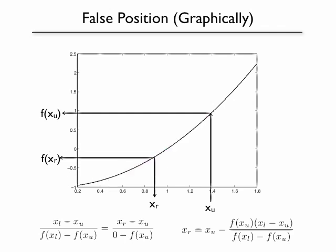We have to choose whether our new root x_r and x upper or x lower brackets it. In this case, the root is bracketed by f of x_r and f of x upper. We can tell that because they have different signs. One is below zero, one is above zero.